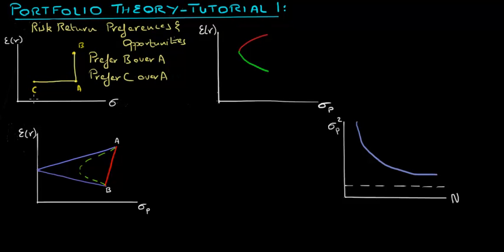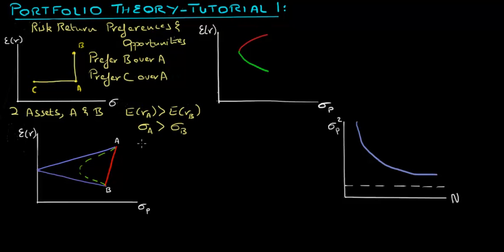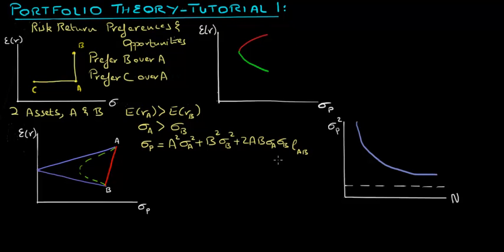Portfolio Theory is essentially about maximizing a portfolio's return and minimizing its risk. Consider a portfolio with two assets, A and B, where the expected return of Asset A is greater than the expected return of Asset B, and the volatility of Asset A is greater than the volatility of Asset B. Then the volatility of the portfolio equals the square root of: proportion of Asset A squared times the variance of A, plus proportion of Asset B squared times the variance of B, plus two times A times B times the volatility of A times the volatility of B times the correlation between A and B.